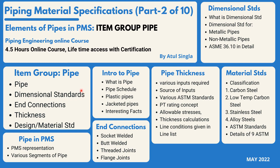The second part is dimensional standard — what it is, why it is required, and what the various dimensional standards are for metallic and non-metallic pipes. We will also look into one dimensional standard in detail so that we can understand the whole concept. The third section is end connections — we will look into each type, its application, how they are defined, and how they are represented.